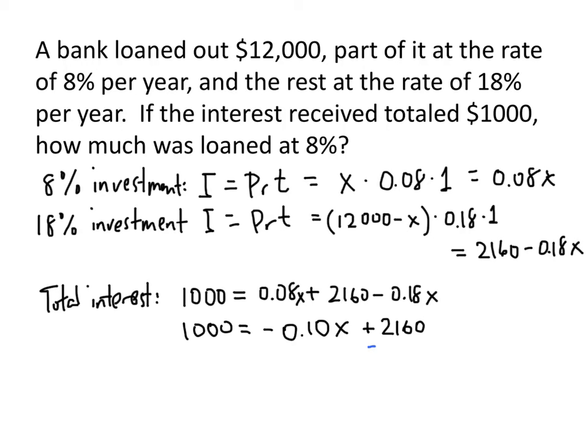Let's subtract 2160 from both sides. On the right-hand side, those cancel. On the left-hand side, we get negative 1,160 equals negative .10x. Divide both sides by negative .10. When we calculate negative 1,160 divided by negative .10, we get x equals 11,600.